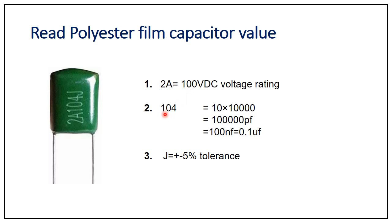The next digits are '104': 1 is the 1st digit, 0 is the 2nd digit, and 4 is the multiplier. So 10 × 10⁴ = 100,000 picofarads, which equals 100 nanofarads or 0.1 microfarad. The last character J indicates a tolerance of ±5%.